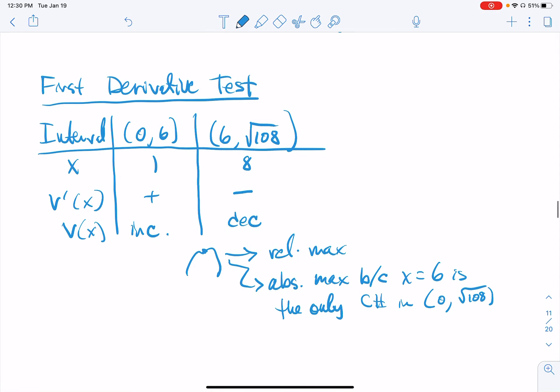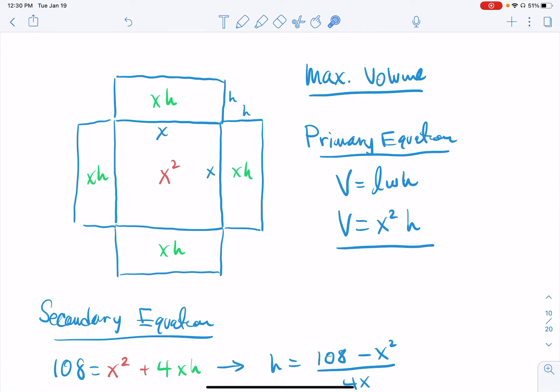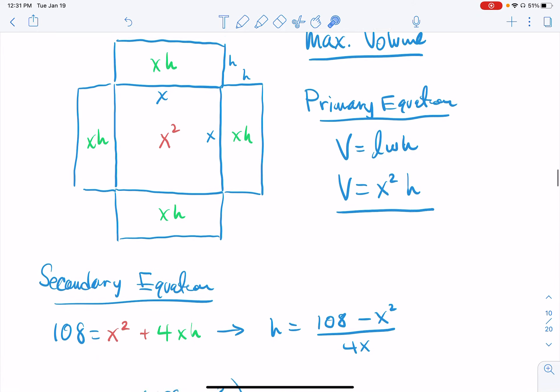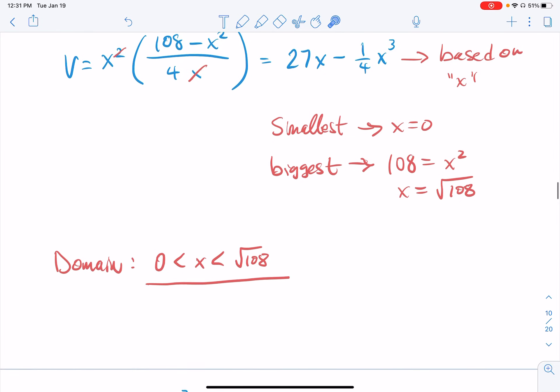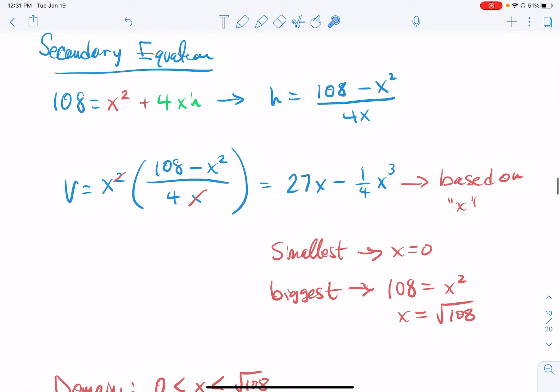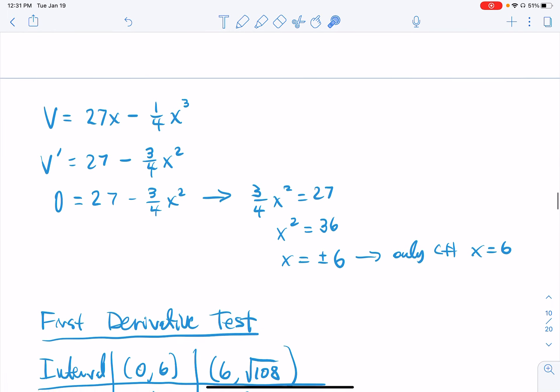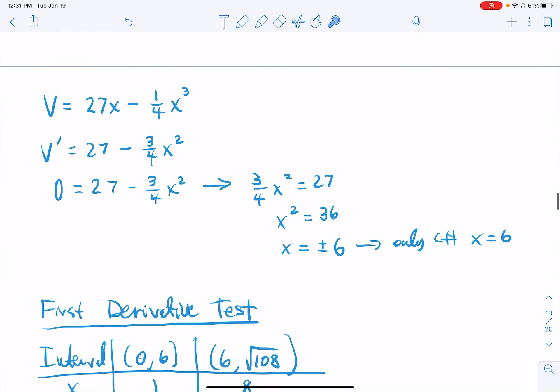So we have the x value. I know how big that we are going to make the bottom of the box here, but we still haven't answered the question. The question is, what is the maximum volume? Well, the maximum volume, all I got to do is plug it into my volume equation. My x equals 6. And where is that volume equation? Here it is.